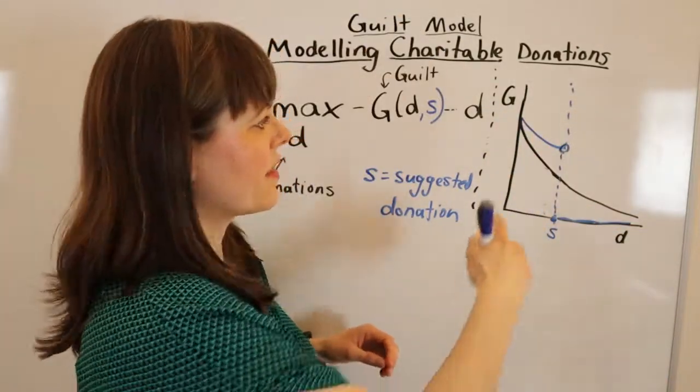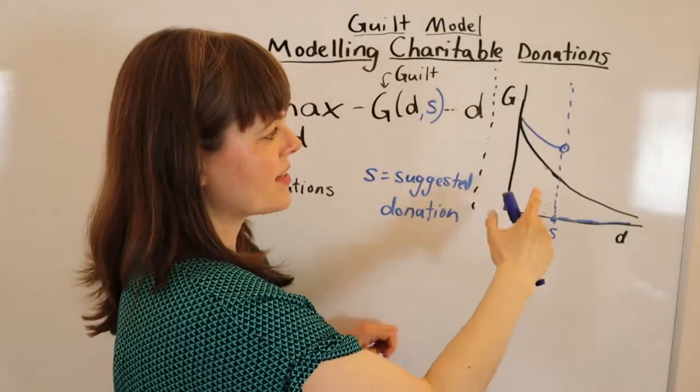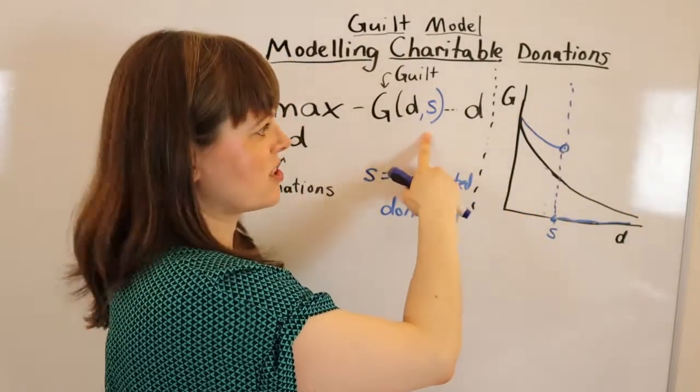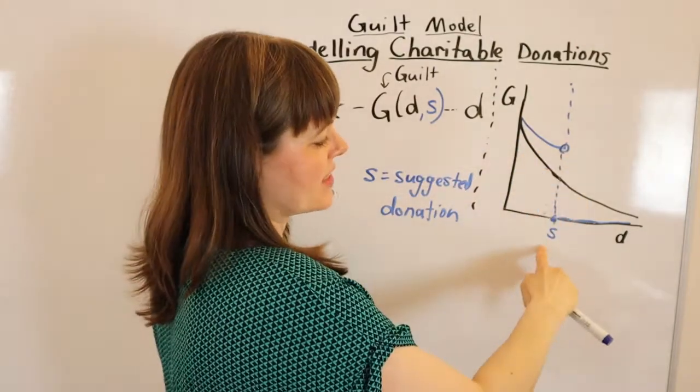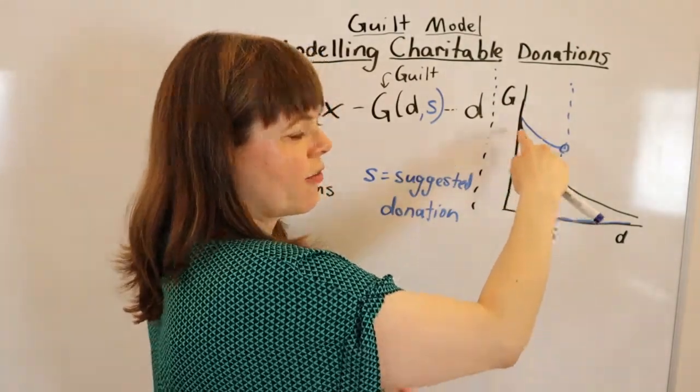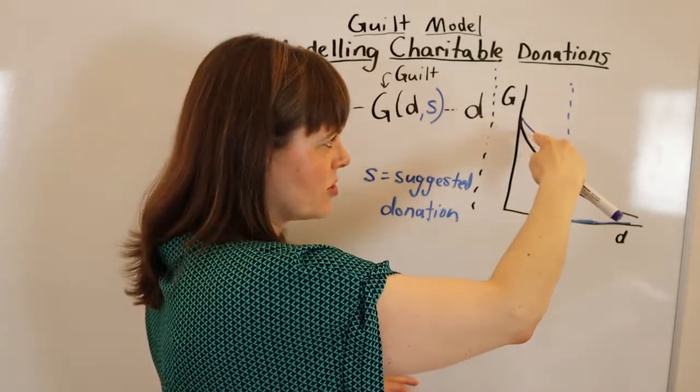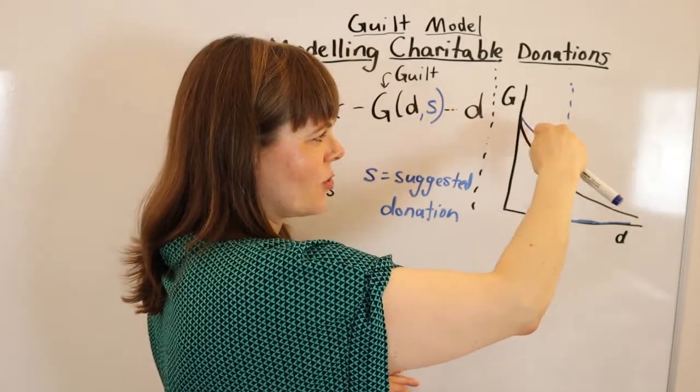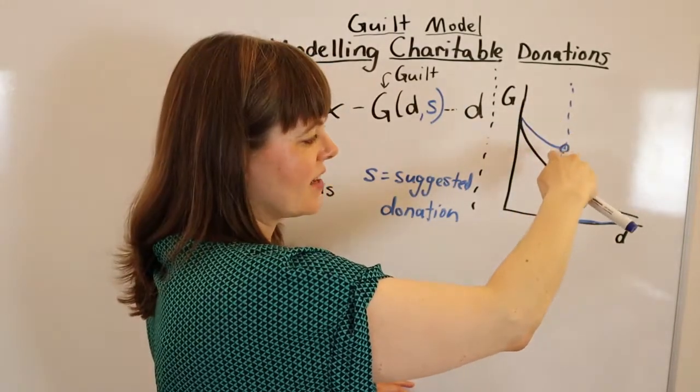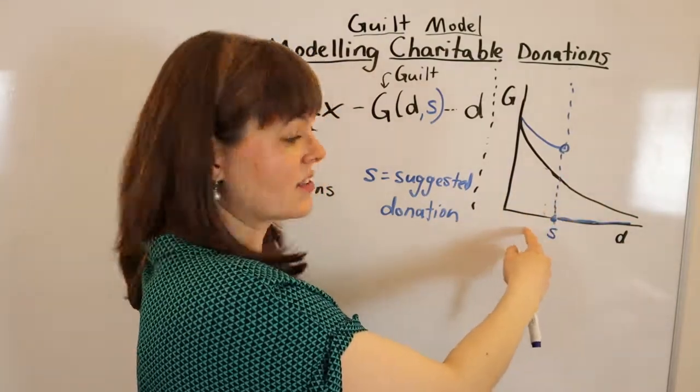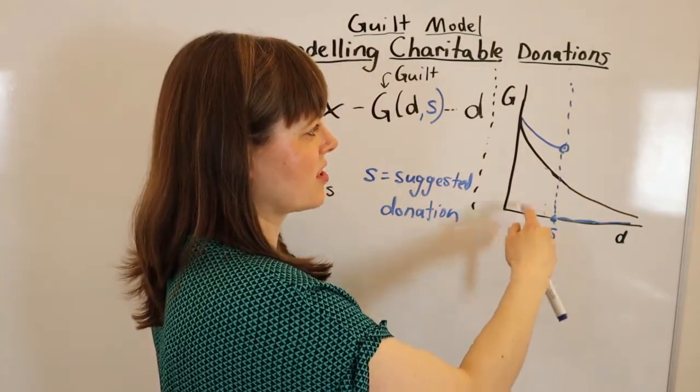All right, so the change in shape that I have made to this graph when we introduced the suggested donation is that giving any amount less than the suggested donation, of course, giving could reduce your guilt, but it doesn't reduce your guilt as much as it would if there were no suggested donation as long as the amount you're giving is below suggested donation.